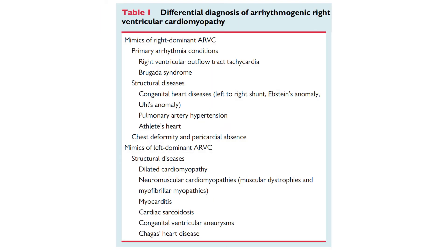Here is a list of differential diagnosis of arrhythmogenic cardiomyopathy. There are some mimics of right dominant arrhythmogenic right ventricular cardiomyopathy, including primary arrhythmia conditions like Brugada syndrome and some structural diseases like congenital heart disease and outlet's heart, and also chest deformity and pericardial absence. We have also some mimics of left dominant type of arrhythmogenic cardiomyopathy, which includes different structural diseases like dilated cardiomyopathy, myocarditis and sarcoidosis.